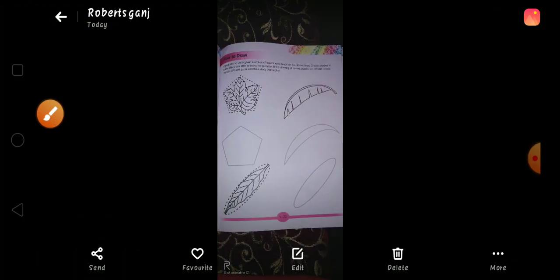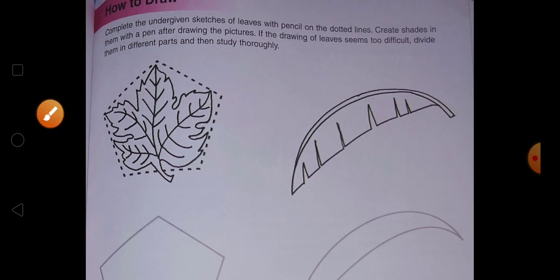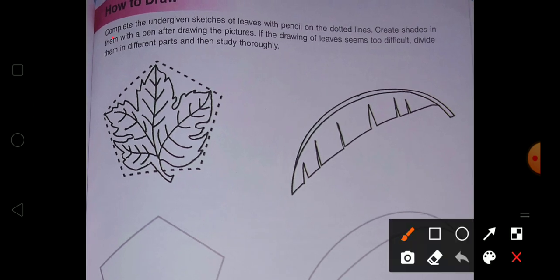So let's move on to page number 23. Complete the under given sketches of leaf with pencil on dotted line. Create shade in them with a pen after drawing the picture. If the drawing of leaf seems too difficult, divide them in different parts and study through leaf.